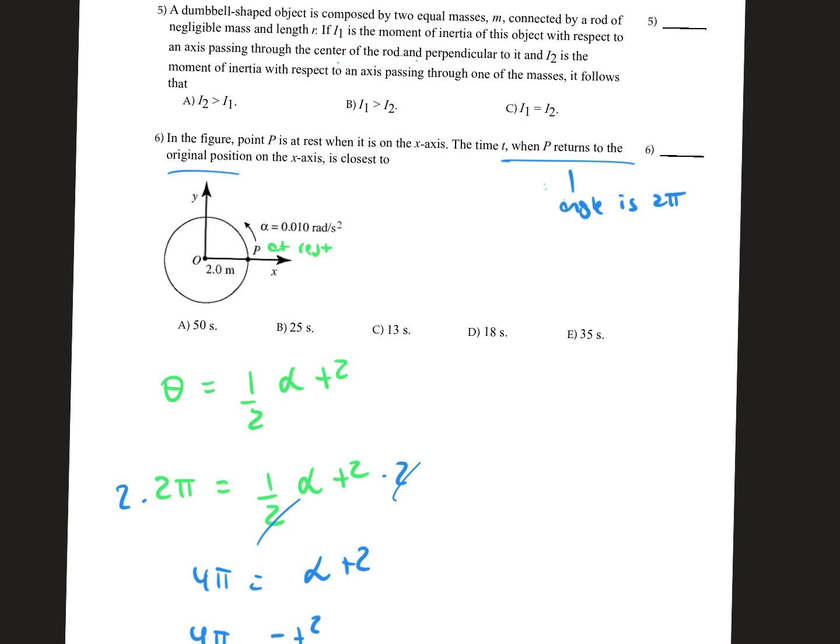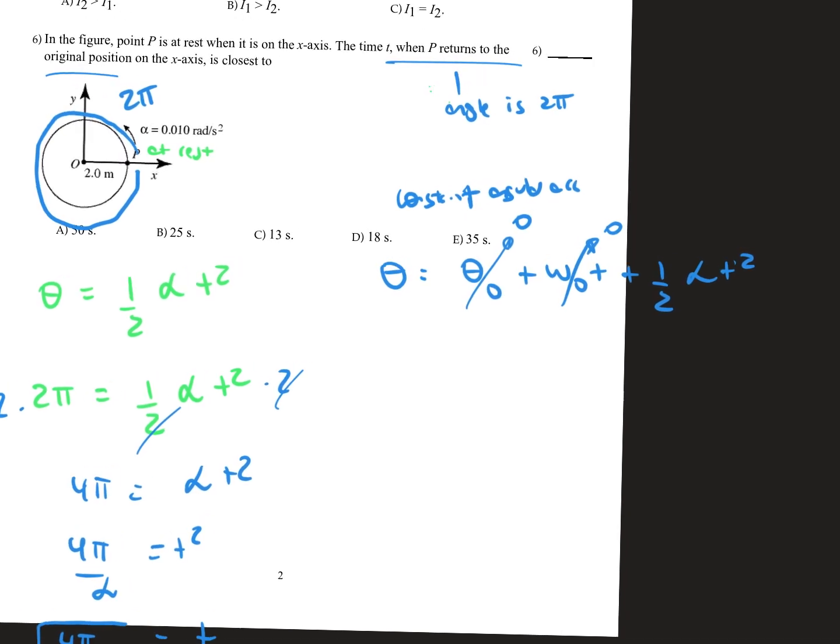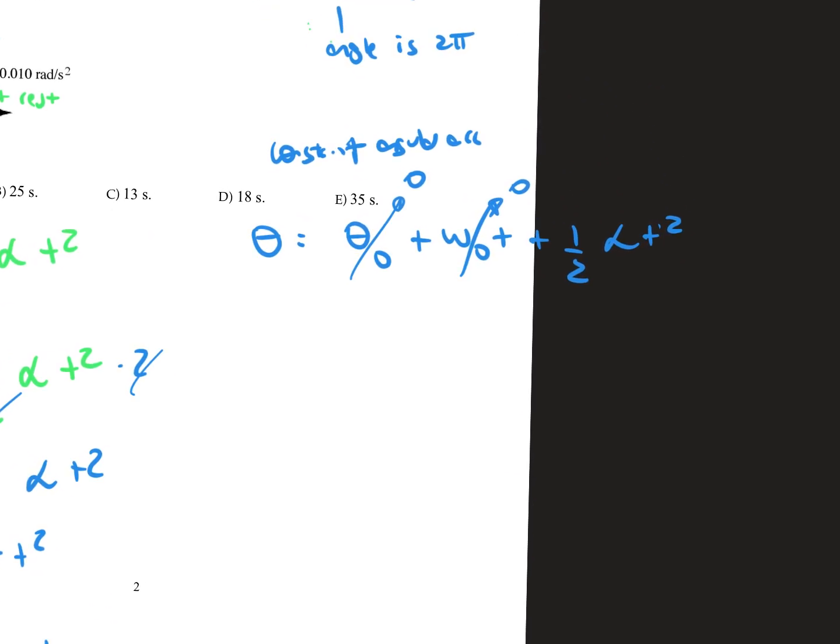When P is rotating this diagram, it's going to make a revolution, 2π. Now the formula that we're going to use for this problem is theta equals initial theta plus omega, or initial omega times the time, plus one half angle acceleration times time squared.